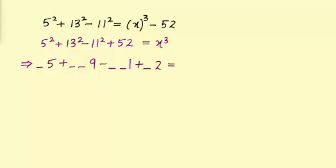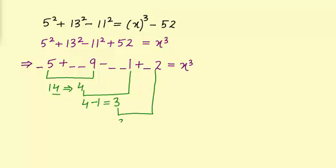This is equal to x cube. Now let's solve the left hand side part. 5 plus 9 is 14 and the unit digit in 14 is 4. 4 minus 1 is 3, and 3 plus 2 will give us 5. So we got 5 as unit digit of left hand side terms. This is equal to unit digit of x cube.